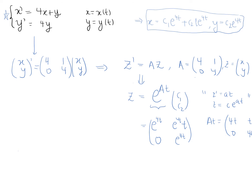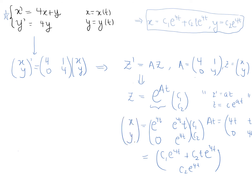So the exponential of the matrix times the constant vector [c1, c2] expands to: the top component gives c1 e to the 4t plus c2 t e to the 4t, and the bottom component gives c2 e to the 4t. That is exactly what we had for x and y, confirming our earlier solution.